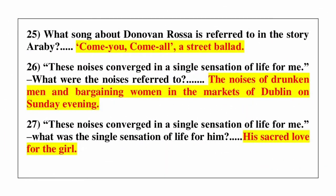Question number 25: what song about O'Donovan Rossa is referred to in the story Arabi? Answer is O'Connell Street Blood.